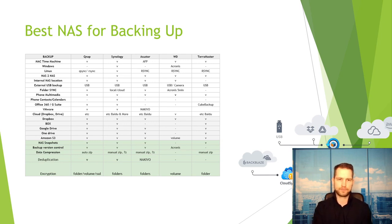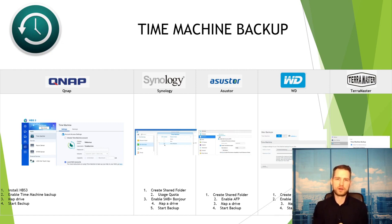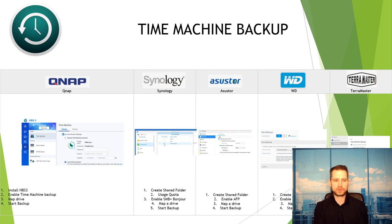Let's dig into Time Machine backups — which NAS is best for backing up your Mac. All NAS devices will allow you to do this. All you need to do is create a shared folder, enable the service, create a separate user, and then on your Mac map the network drive and enable Time Machine. On QNAP you can install HBS3, which simplifies the process so you don't need to do these things manually.